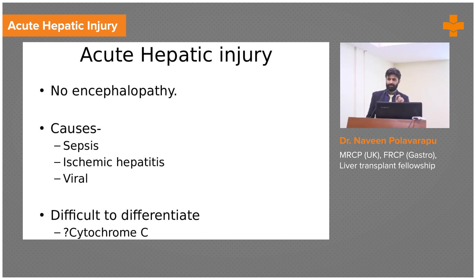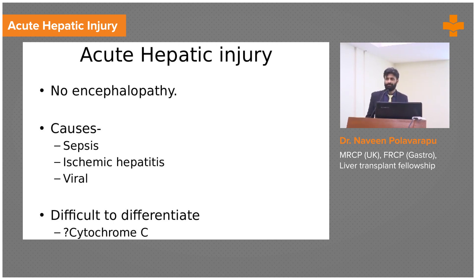Similarly, ischemic hepatitis — we often see patients who have had a cardiac arrest or hypovolemic shock. Immediately after resuscitation or CPR, when you do liver enzymes, they will be in the thousands. Particularly AST will be much higher than ALT. Bilirubin will be somewhere around 4–5. This is an acute insult, an acute injury to the liver. If you tide it over, make sure you transfuse well, maintain perfusion, the liver will recover. They don't have necrosis — they have an injury. That's the difference.